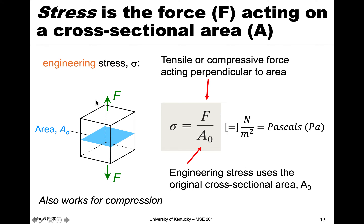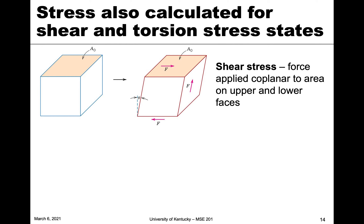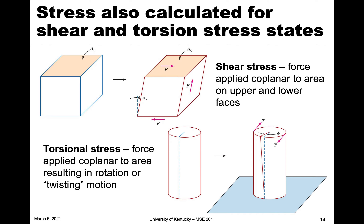This engineering stress definition works for tensile or compressive forces perpendicular to the area. We can also talk about stress in the context of shear and torsion states. For shear, we have a block of material where the force acts to the right on the top and to the left on the bottom, shearing the material from upper and lower faces — the force is coplanar with the area. For torsion, we have a rod shape where a torsional force acts to twist or rotate the rod.